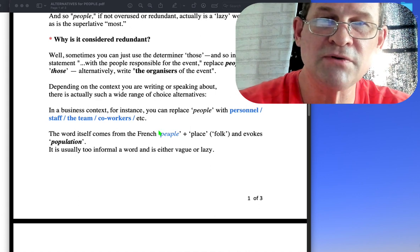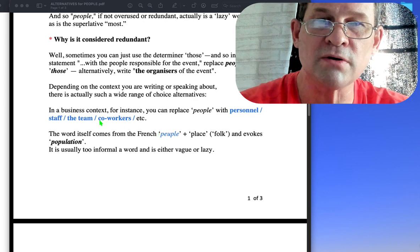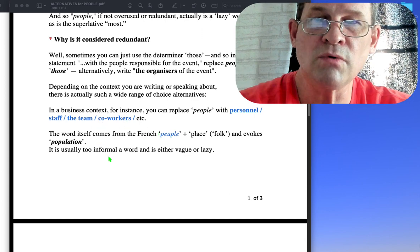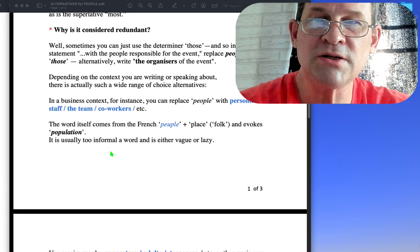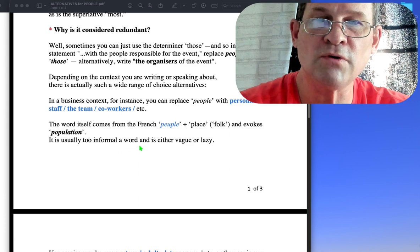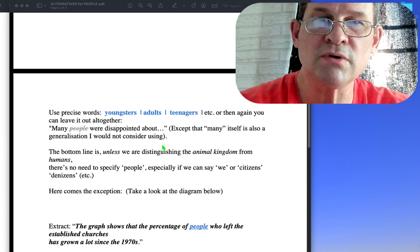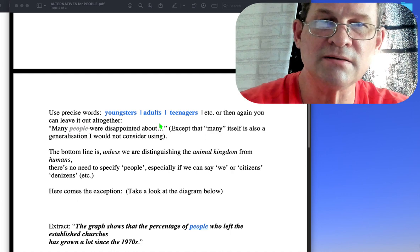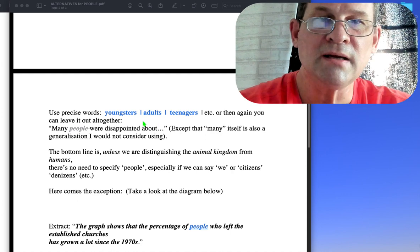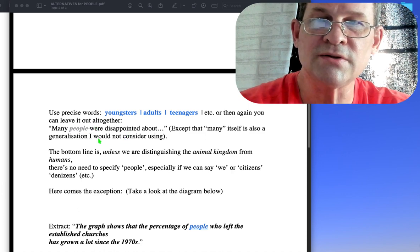In a business context, for instance, you can replace people with personnel, staff, the team, co-workers, etc. The word itself comes from the French, as I mentioned, and evokes population, so it's usually too informal a word and is vague or lazy. Use precise words like youngsters, adults, teenagers, citizens, and so on.